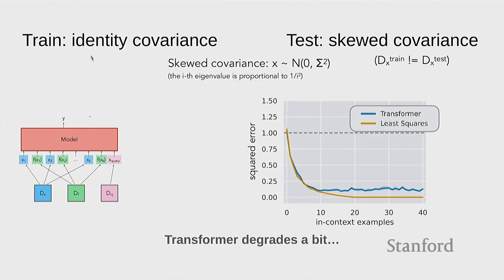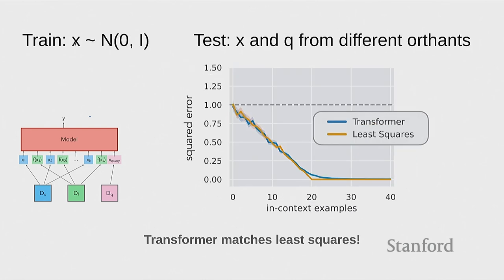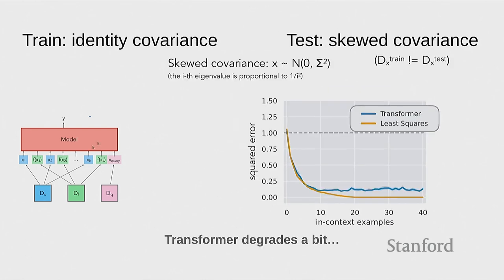What happens if at training time we have identity covariance, but at test time all the x's and the query are drawn from a different covariance distribution where the covariance is skewed? Here you definitely get some degradation — it doesn't hit zero as it should. Least squares would hit zero because it's a fixed algorithm with no meta-training. So it's not exactly least squares, but it's approximately least squares.